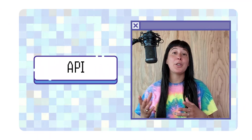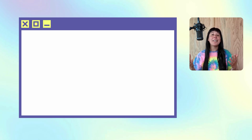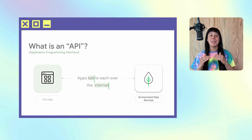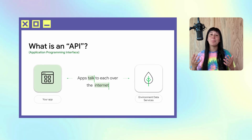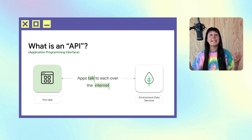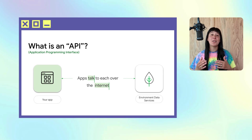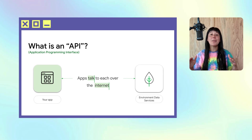If you're not familiar with the term API, think of it as a type of digital bridge. It stands for Application Programming Interface, and it allows different software applications to talk to each other and share information over the internet.